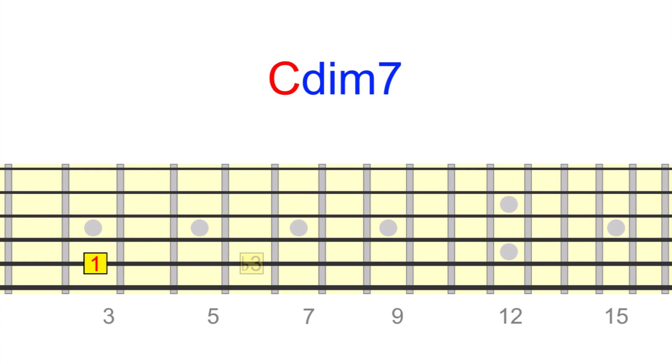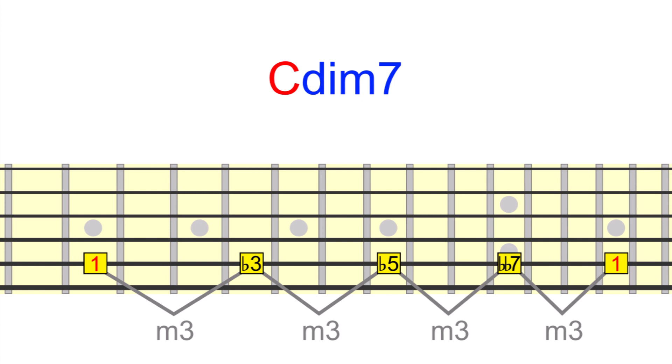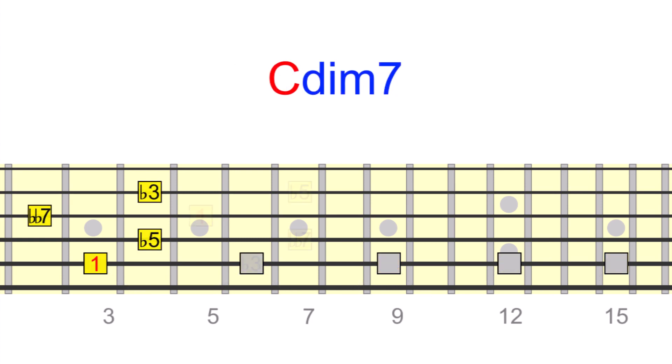If we lay out the intervals across that root string, we can see that each tone is separated by a minor 3rd interval, or 3 frets if you like. This consecutive sequence of minor 3rds, from root to octave, creates what is known as symmetry. In practical terms, it means we can move any diminished 7th shape up the neck in minor 3rds, and we'll essentially be playing inversions of the same chord.